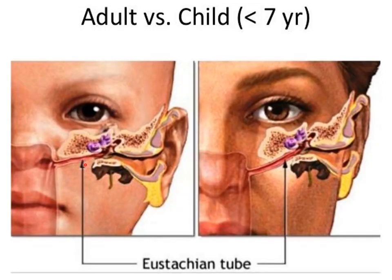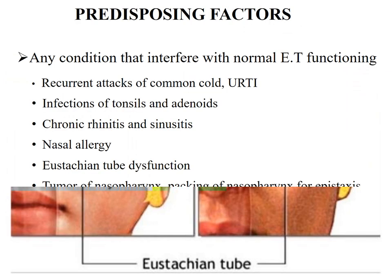This is a comparison of the Eustachian tube of a child with an adult. You can see the child's tube is more horizontally placed while it is slanting in the adult, so infection can go straight to the ear more commonly in children as compared to adults.